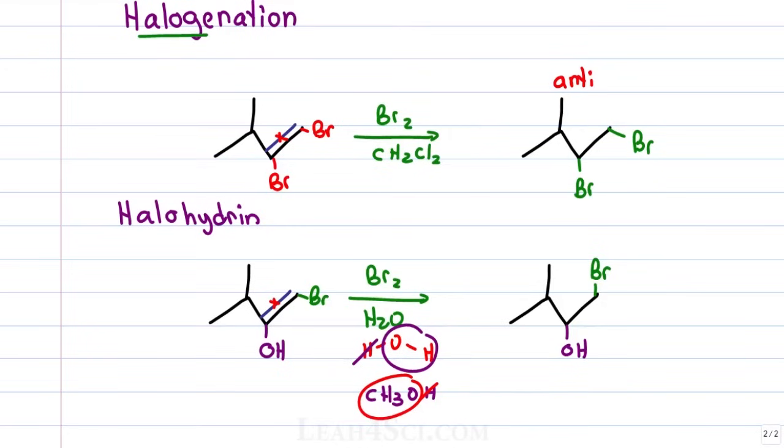That gives us halo, halogen and hydrin, water or in this case OH. Just like with halogenation there is a halogen bridged intermediate so it's going to be an anti-addition, that means bromine and OH will be on opposite faces of the pi bond.